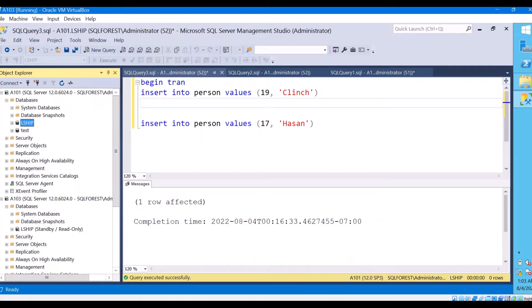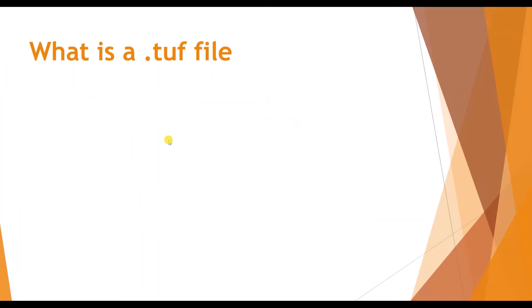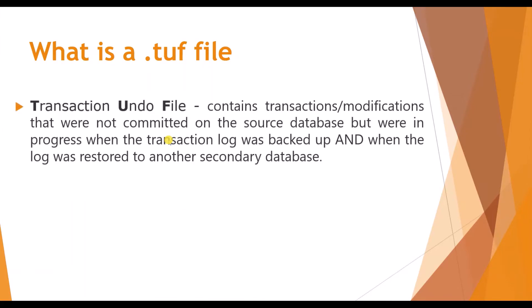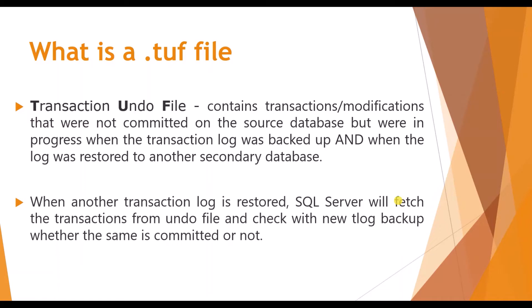So what is a tough file? It is a transaction undo file that contains transactions or modifications that are not committed on the source database but were in progress when the transaction log was backed up. These uncommitted transactions will be stored in the tough file which is present in the secondary server instance, so that users in the secondary database do not read uncommitted data. When another transaction log is restored, SQL Server will fetch the records from the transaction undo file and check with the new tlog backup whether the same is committed or not. If it is committed the transactions will be returned to the disk, else it will be stored in the transaction undo file until it gets committed or rolled back.